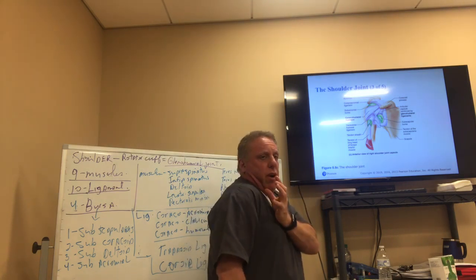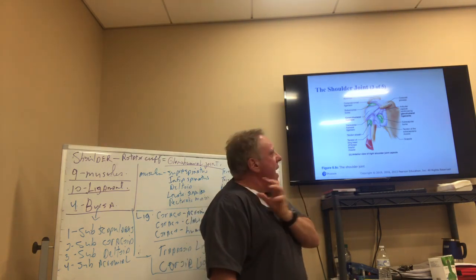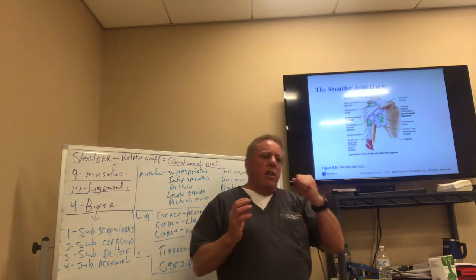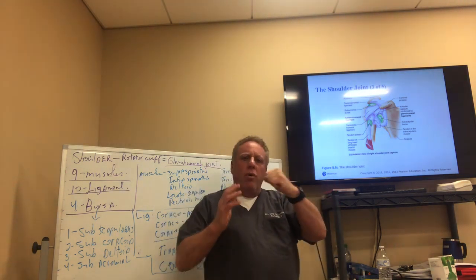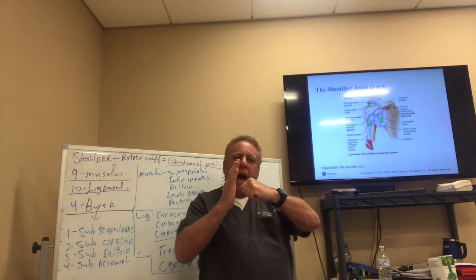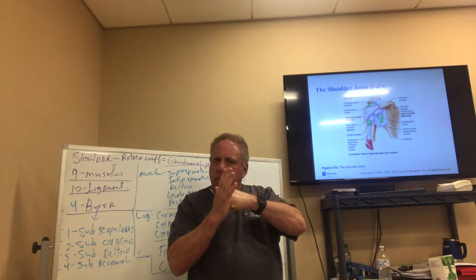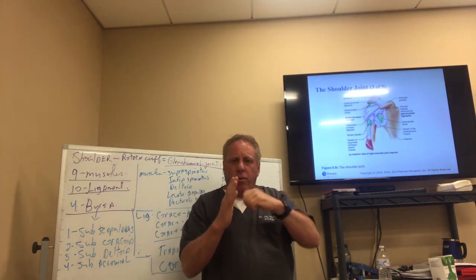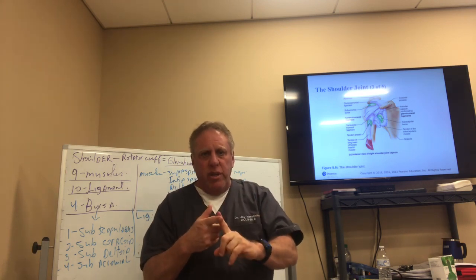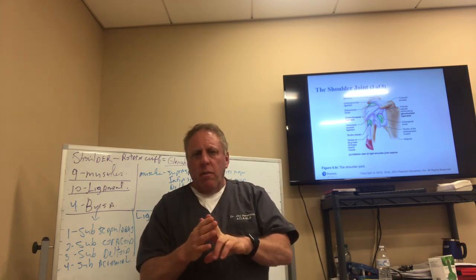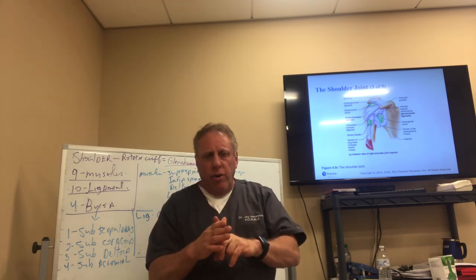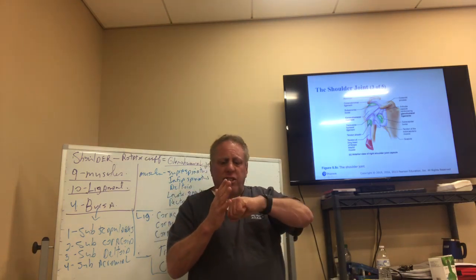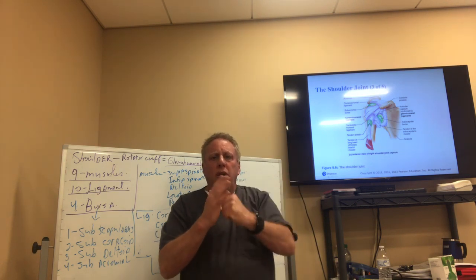The scapula comes to the front — it actually extends out and it creates this shoulder girdle. And where the glenoid, the humeral head, and the scapula meet — remember, they never actually touch. There's always a separation. Between bones, there's always going to be synovial fluid, cartilage, and bursa. Always. Because you have to have this liquid oil for movement, and the muscles and ligaments around it to keep it stable.